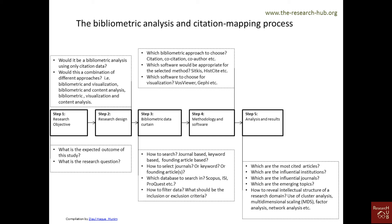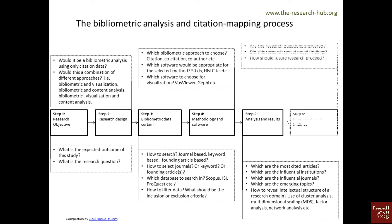Based on your chosen methods, you conduct your analysis, and your analysis leads to findings and results. All findings are related back to your research questions from step 1 — step 5 reflects on step 1. Typical findings include the most cited articles, the most influential institutions, the most influential journals, and emerging topics. You can also draw the intellectual structure of a research domain using cluster analysis, multidimensional scaling, factor analysis, or network analysis.